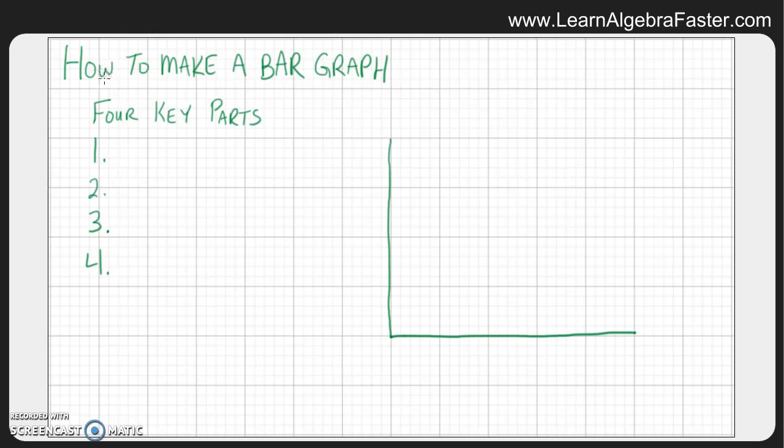Starting out, this is important for every graph but definitely for a bar graph, key part number one is the title. You want to know what a bar graph is about, and you should see that near the top. For this bar graph example, we will talk about the number of wins in a season. The title should usually come at the top of the bar graph, so that's a good place to look for it.